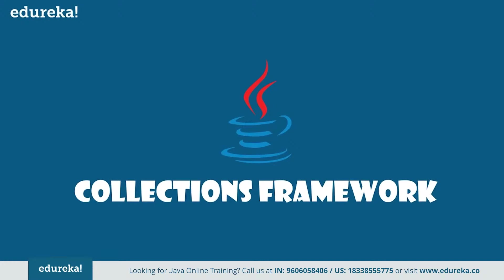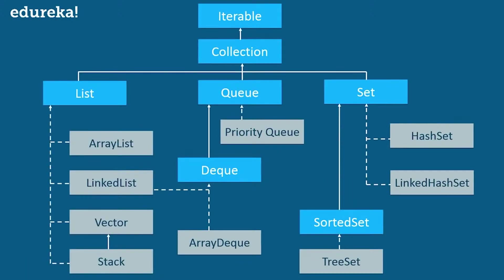A Java collection framework provides an architecture to store and manipulate a group of objects, and it includes interfaces, classes, and algorithms. In this figure, blue boxes refer to the different interfaces and gray color rectangles define a class. Here, List is an interface, and ArrayList, LinkedList, and Vector — all these classes implement List as an interface.